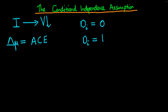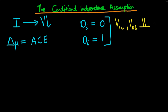In this video I want to talk about the situation when we cannot assume that DI is randomly assigned. That means we can't write that the potential level of violence in a state had they received infrastructure spending, and the potential level of violence had they not received it, are independent of DI.